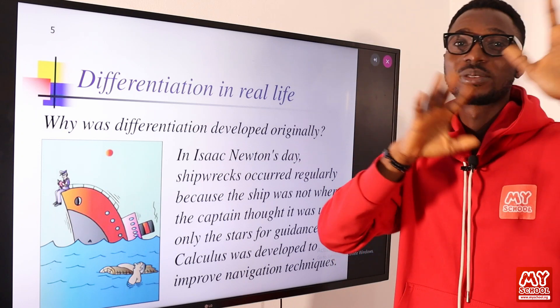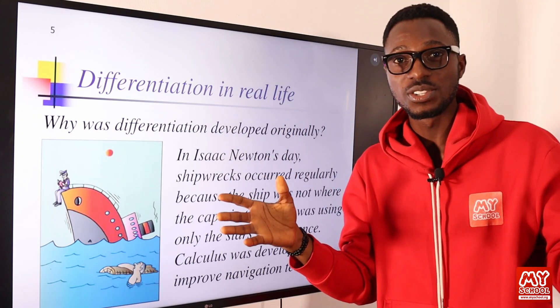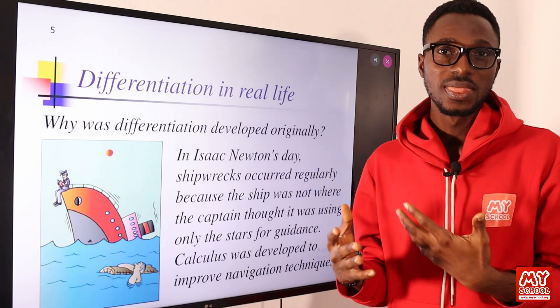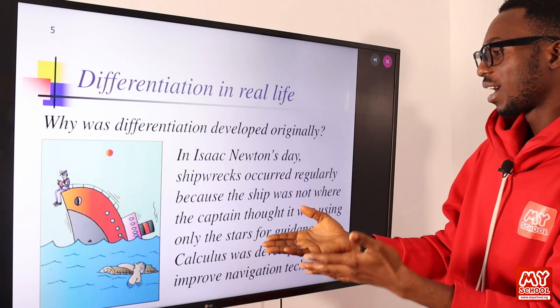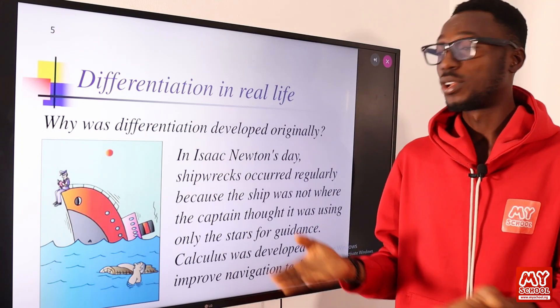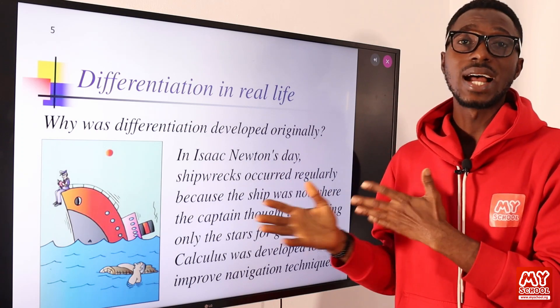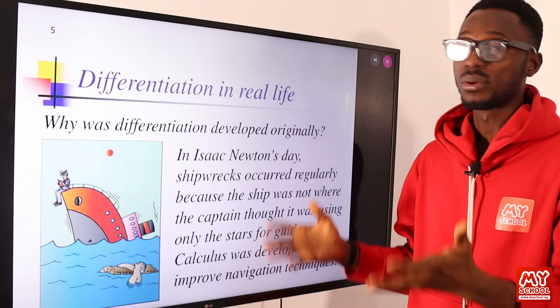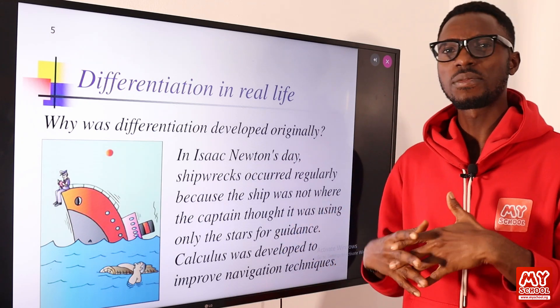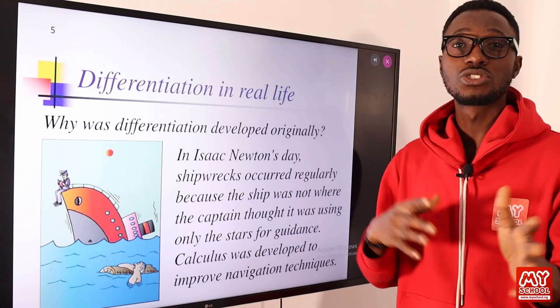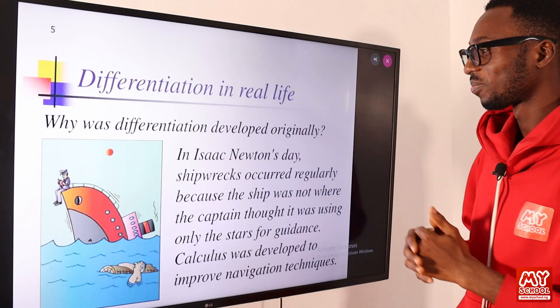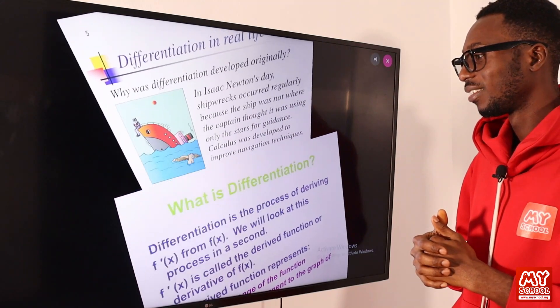They had to use the stars to predict things like wind direction. Those things were not really as reliable as expected. Calculus was developed to improve navigation techniques. There was also another person that assisted Isaac Newton in this whole concept. This is a real-life application or the reason why differentiation was introduced. It's useful in astronomy, engineering and the likes.